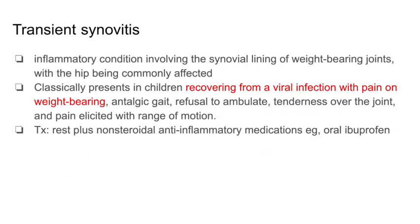Transient synovitis is an inflammatory condition involving the synovial lining of weight-bearing joints, with the hip being most commonly affected. Classically, a child presents after a recent viral infection and now has pain on weight-bearing. Their gait can be affected with a refusal to ambulate, tenderness over the joints, and pain elicited with range of motion.